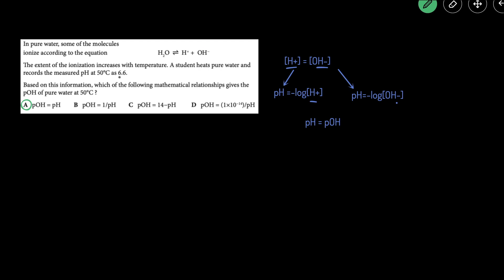If the pH is 6.6, that means the pOH is also going to equal 6.6. In this case, the pH plus the pOH is going to equal 13.2 instead of 14 because we're not at 25 degrees Celsius.